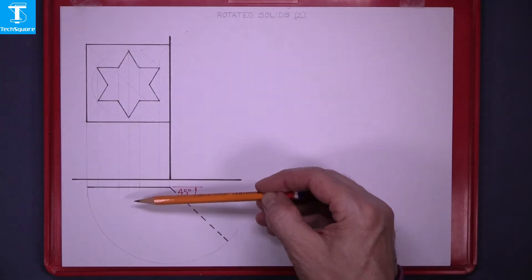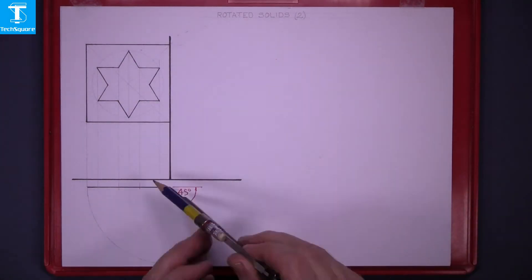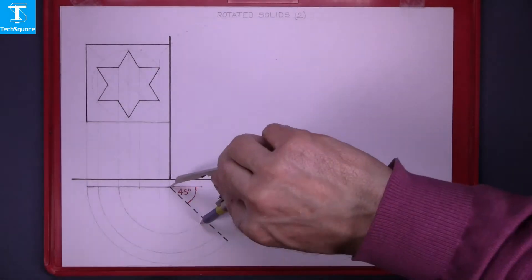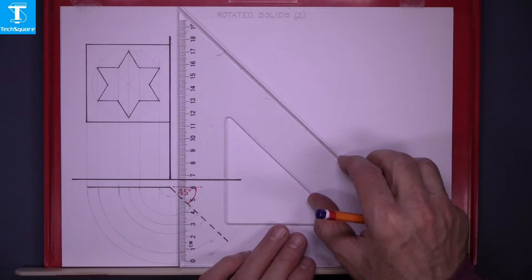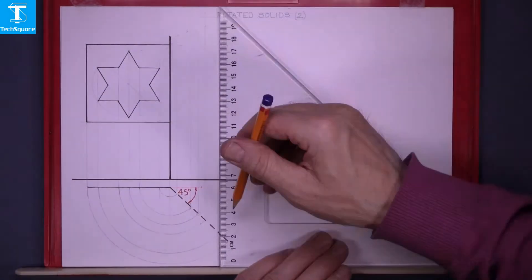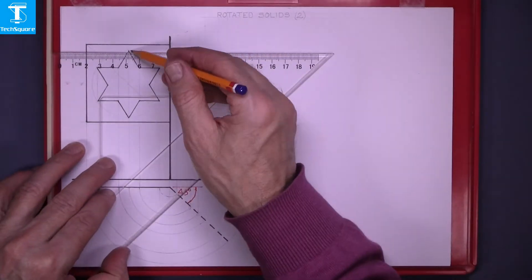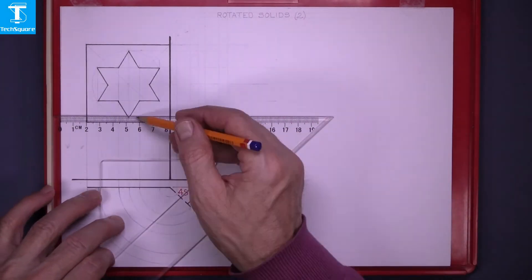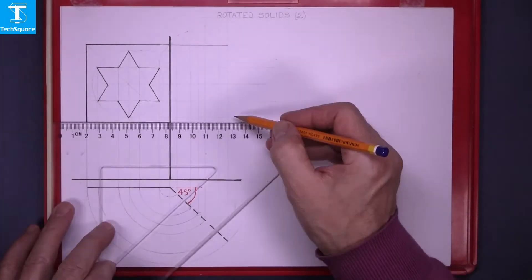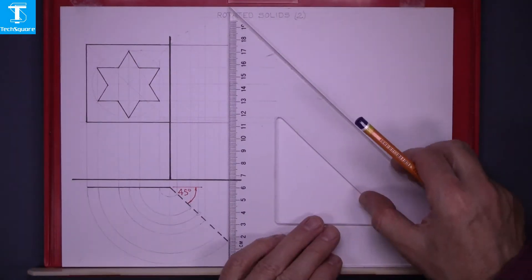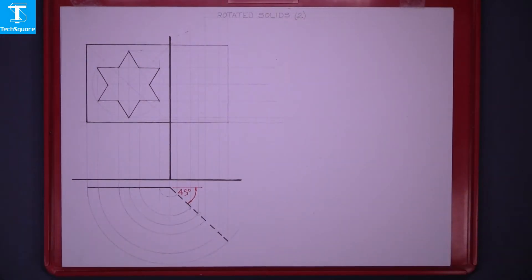First thing we do is draw the points down vertically, and then using your compass, rotate them around to the 45 degree line. And from the 45 degree line, draw them vertically up, and then horizontally across from the elevation. And that's all the points drawn in now, and now just laying in the outline of the sign.